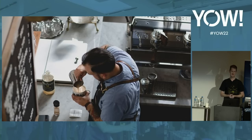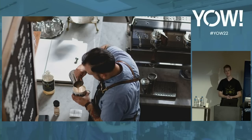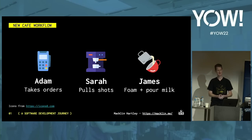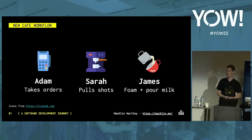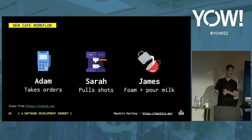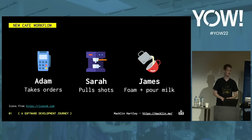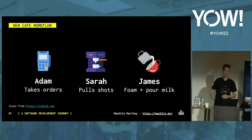Adam hires two new employees — Sarah and James. Sarah is an expert in pulling coffee, so she operates the coffee machine. James has a master's degree in latte art, so he's responsible for pouring the milk. This is now two less things Adam has to worry about, and he can focus on providing really good customer service. Importantly, everyone here can work independently of each other. Can we do something similar in software?